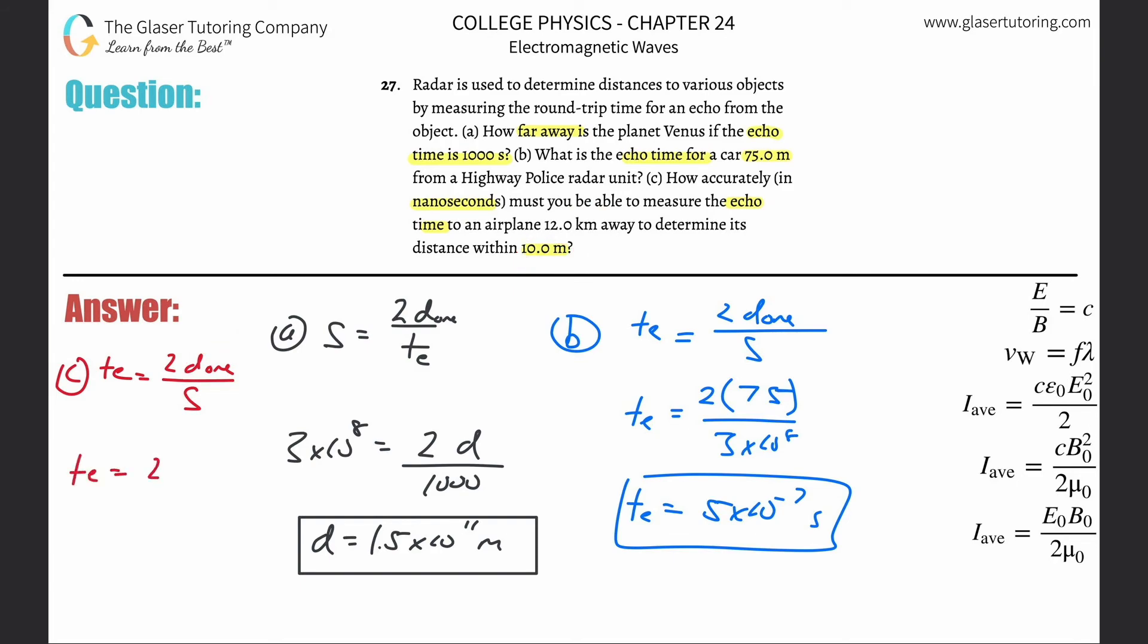So the echo time here is going to be 2 times then 10, all divided them by 3 times 10 to the 8. So the echo time here is going to be, let's do it. So that's basically 20 divided by 3 times 10 to the 8. That's going to be now 6.67 times 10 to the minus 8 seconds.